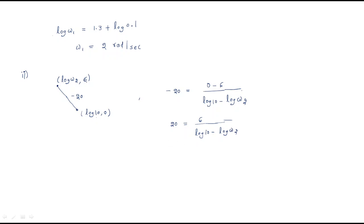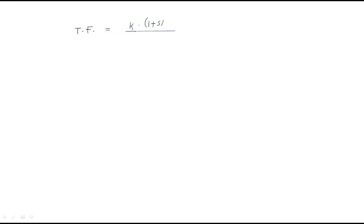Since log(10) base 10 equals 1, solving gives log(10) − log(ω2) = 6/20 = 0.3, so log(ω2) = 1 − 0.3 = 0.7. This gives w2 = 5.01 radians per second, approximately 5 rad/s. The partial transfer function is now k × (1 + s/2) / [s × (1 + s/5) × (1 + s/10)].